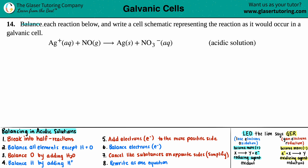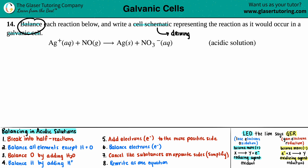Problem 14: balance each reaction below and write a cell schematic representing the reaction as it would occur in a galvanic cell. We have to write a cell schematic — basically a chemistry drawing — representing this balanced equation in a different way. We have Ag⁺(aq) + NO(g) → Ag(s) + NO₃⁻(aq), to be balanced in acidic solution. A galvanic cell means a spontaneous cell: ΔG is negative and no external energy is needed.